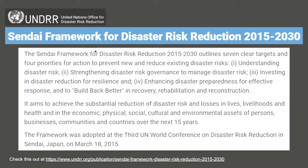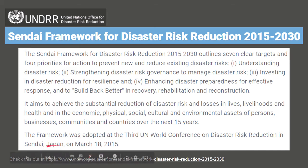The Hyogo Framework ended in 2015 and was followed by the Sendai Framework for Disaster Risk Reduction, covering 2015 to 2030. The Sendai Framework outlines seven clear targets and four priorities for action to prevent new and reduce existing disaster risk. It was adopted at the Third UN World Conference on Disaster Risk Reduction in Sendai, Japan in March 2015.